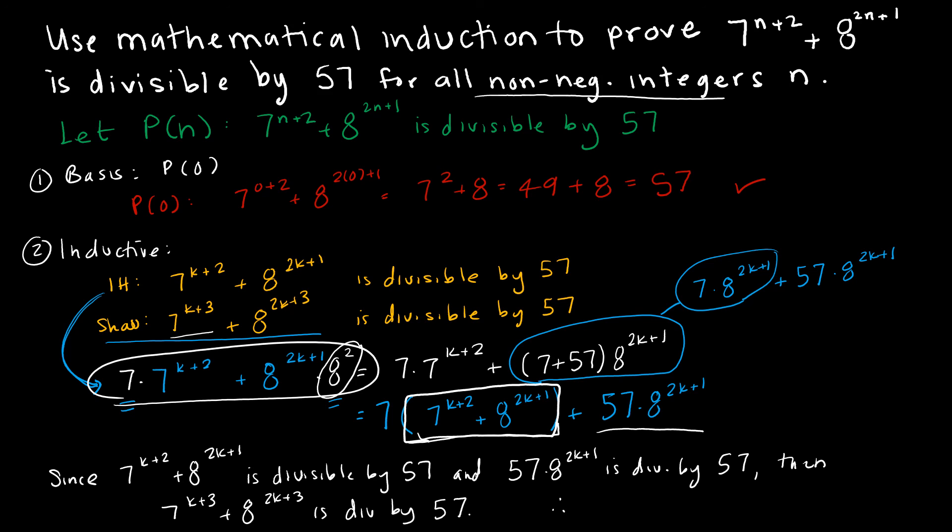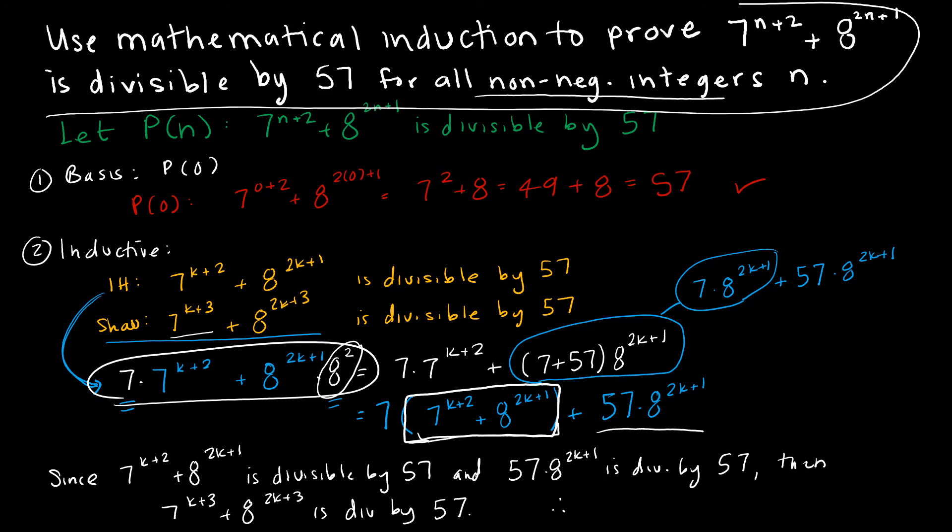And then I would restate everything that I said here. I would show that 7 to the n plus 2 plus 8 to the 2n plus 1 is divisible by 57 for all non-negative integers n.